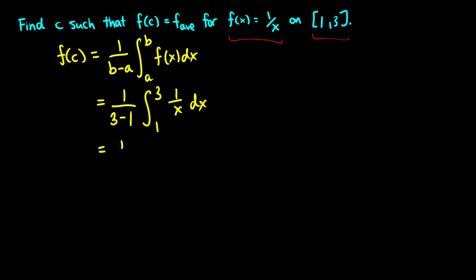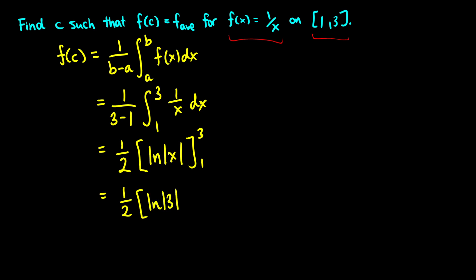Taking the antiderivative of 1 over x — which is one of the special ones — gives ln x, evaluated from 1 to 3. This equals one-half times ln 3 minus ln of 1. Since ln 1 equals 0, this is essentially ln 3 divided by 2. So we found our average: f of c is supposed to equal ln 3 over 2. But the question also asks for the value of c such that f of c equals that average.